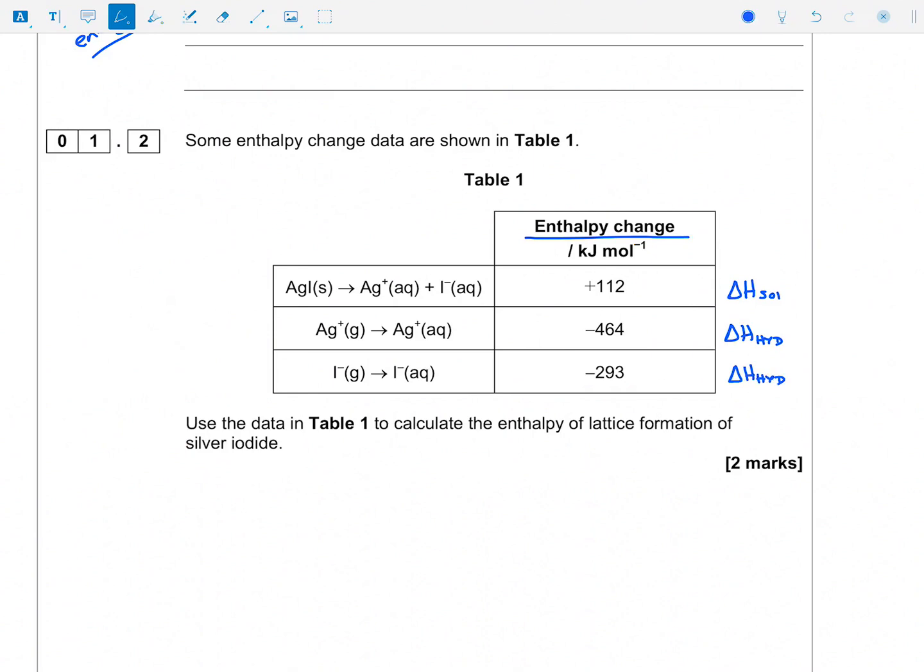Use the data in Table 1 to calculate the enthalpy of lattice formation of silver iodide. Well, do we know an equation that involves delta H solution, enthalpy of lattice formation or dissociation really, and those enthalpies of hydration? Well, hopefully we do, and all we need to do is rearrange that equation to find that value there for the enthalpy of lattice formation of silver iodide, bearing in mind it's formation.